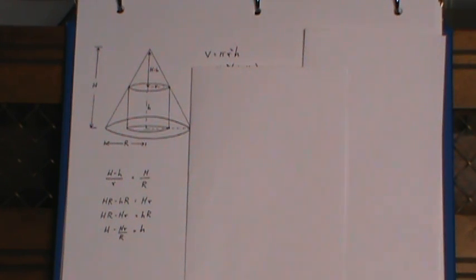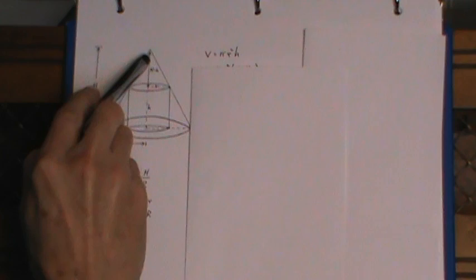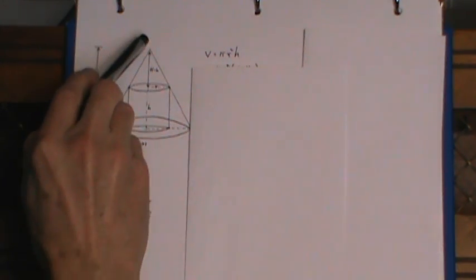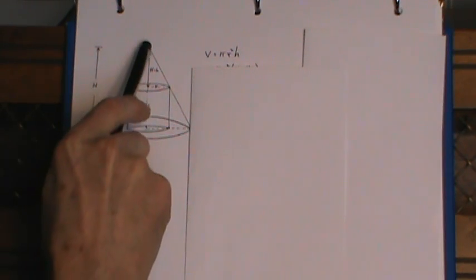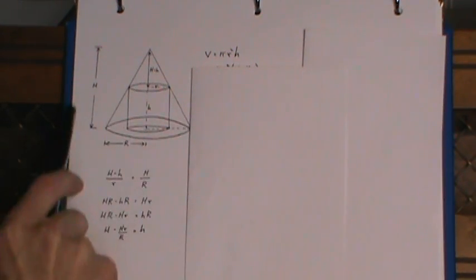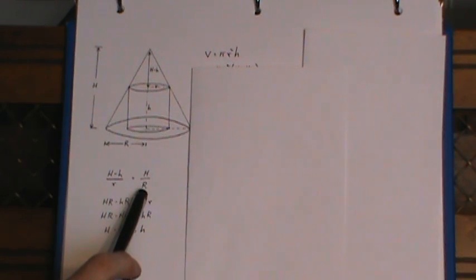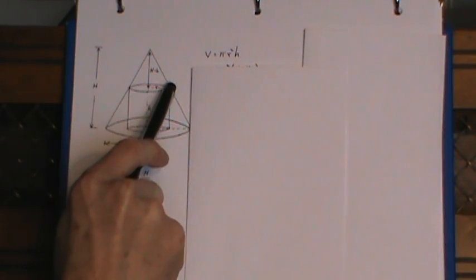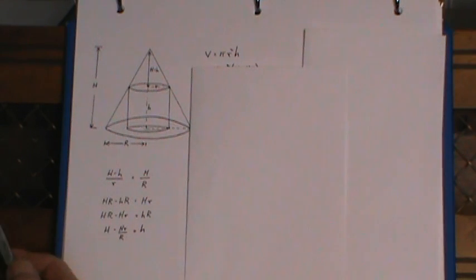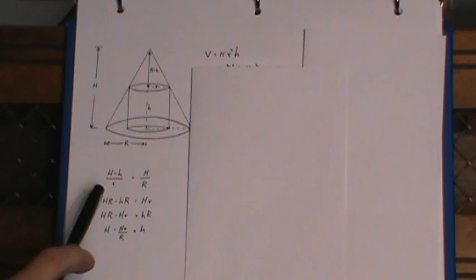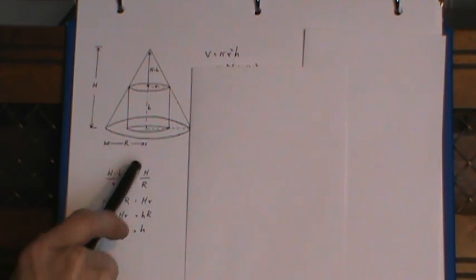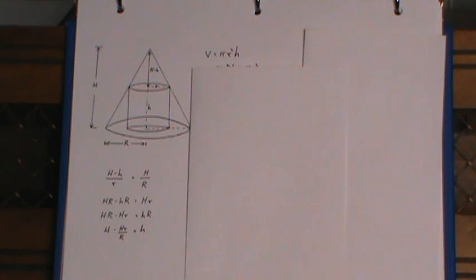What I do here is look at similar triangles. There's a small triangle at the top which is similar to a larger triangle. The ratio of height to base of that large triangle is H to R, and the ratio of height to base, or I should say height to base, is capital H minus little h over lowercase r. So it's just two ratios that are equal from similar triangles.